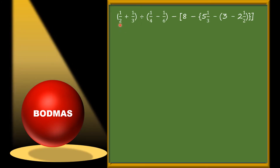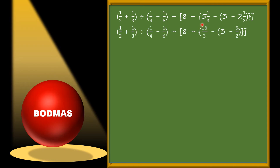Here are small brackets, big brackets, and curly brackets. There are three small brackets. According to BODMAS and the sequence of brackets, we need to solve small brackets first, and we will solve all three together. Before that, let us convert mixed numbers into improper fractions. So the question is: (1/2 + 1/3) ÷ (1/4 − 1/6) − [16/3 − {3 − 5/2}], where 5 and 1/3 becomes 16/3 and 2 and 1/2 becomes 5/2.